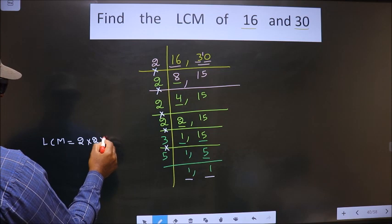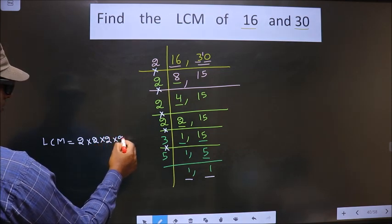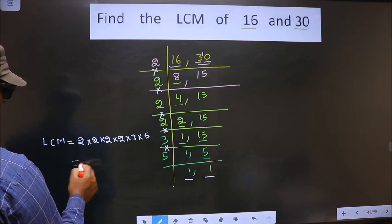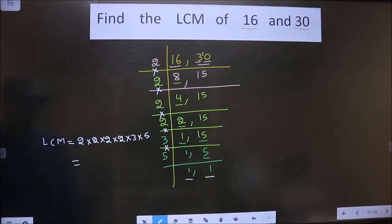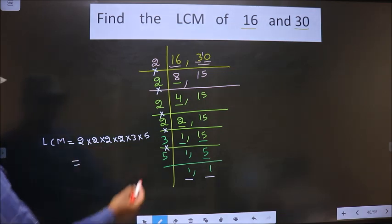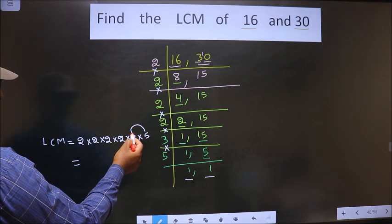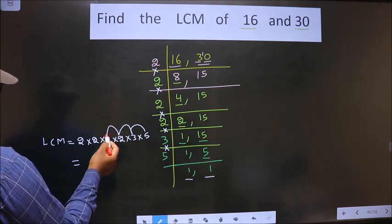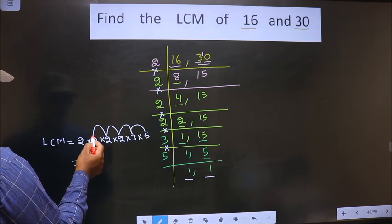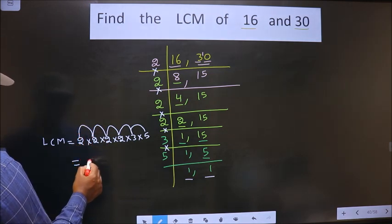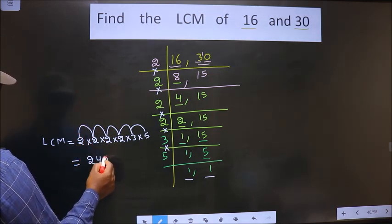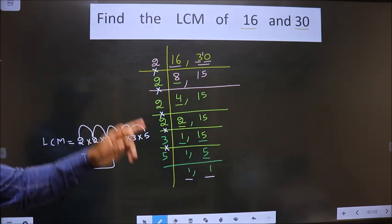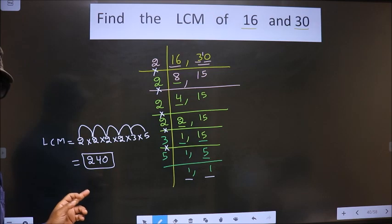2 × 2 × 2 × 2 × 3 × 5. Let us multiply all these numbers. 5 × 3 is 15. 15 × 2 is 30. 30 × 2 is 60. 60 × 2 is 120. 120 × 2 is 240. So this is our answer. Am I clear?